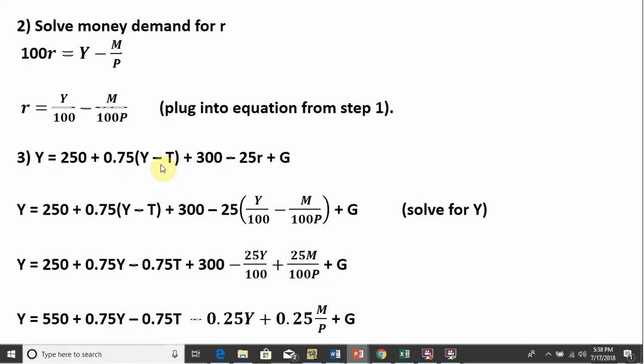So the next step will be to plug this R into the equation from step one. So here's the equation from step one. And for R, I will plug in this Y divided by 100 minus M divided by 100 times P. So I do that. And now it's a matter of simplifying and solving this for Y.